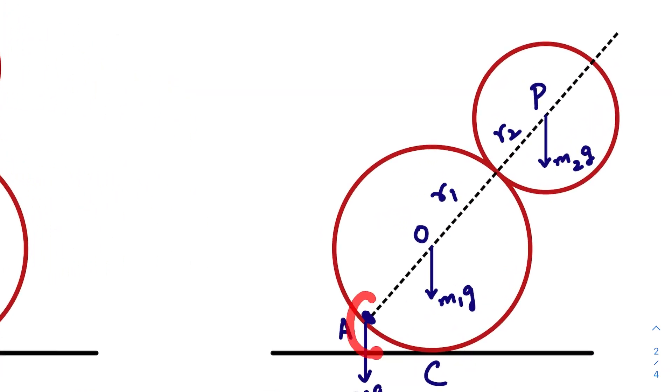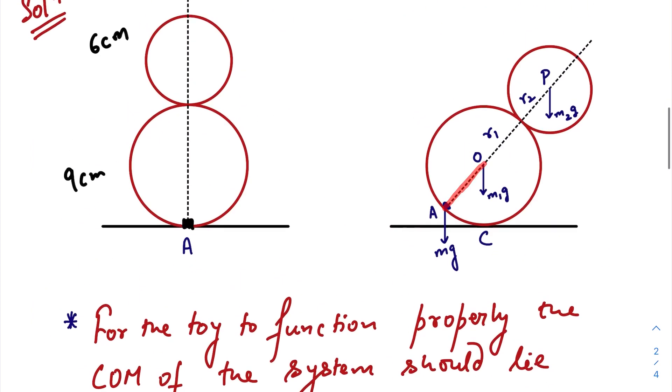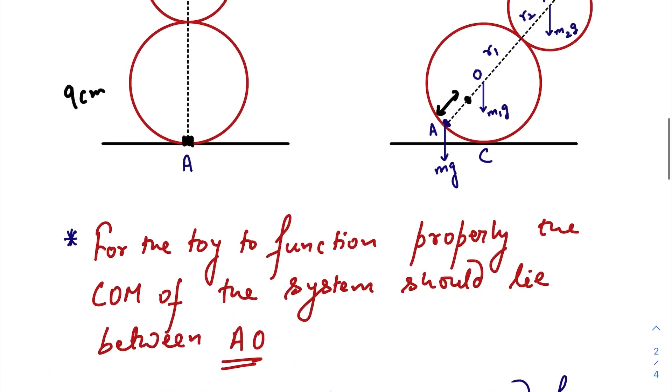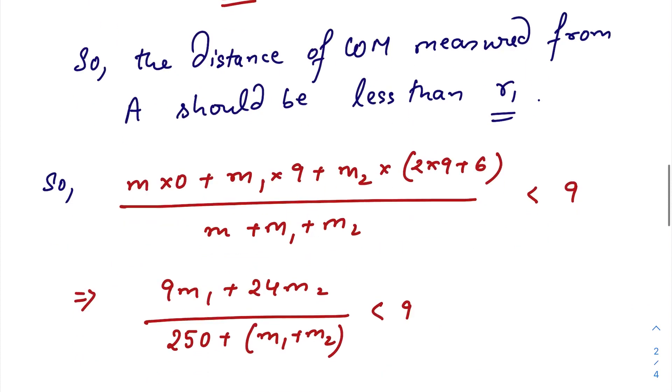So our condition is that the center of mass of this whole system should lie within the range A and O. The distance of the center of mass measured from A should be less than r1. So with respect to point A, let us write down the equation of the center of mass.